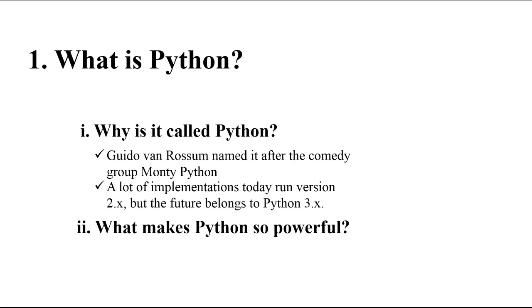Why is it called Python? Guido van Rossum named it after the comedy group Monty Python. A lot of implementations today run version 2.x, but the future belongs to Python 3.x. What makes Python so powerful is PyPI — the Python Package Index — a repository of third-party Python modules. You can install packages using pip by running the command: pip install library-name.